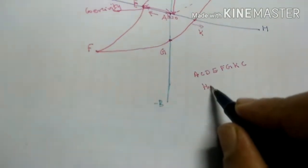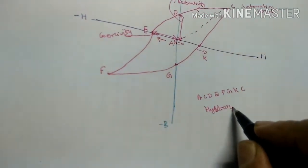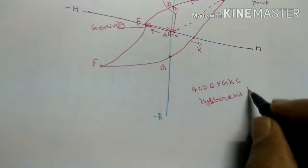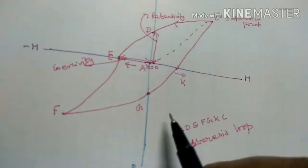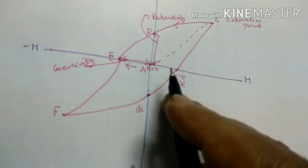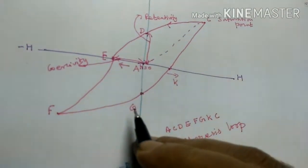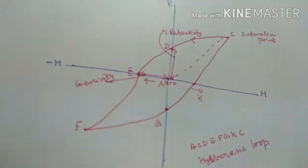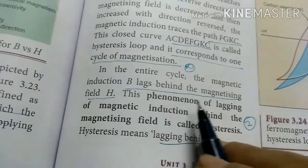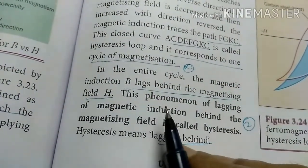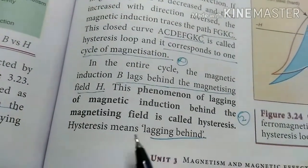This closed loop is called the hysteresis loop. Throughout the entire cycle, B is lagging behind H. This phenomenon of the magnetic induction B lagging behind the magnetizing field H is called hysteresis.